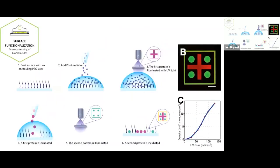Concerning surface functionalization, the UV light projected by PRIMO in the presence of a dedicated photo-initiator is able to locally degrade an anti-fouling layer of polyethylene glycol. If afterwards a biomolecule solution is incubated, the biomolecules will specifically adsorb onto the illuminated areas. Two important aspects are that it is quantitative — the PRIMO system can print a biomolecule with exquisite control over biomolecule densities — and that micropatterning steps can be repeated to print multiple biomolecules with minimal overlapping and optimal alignment.